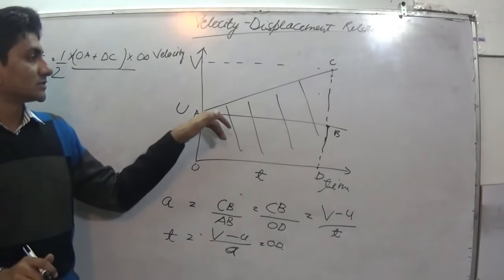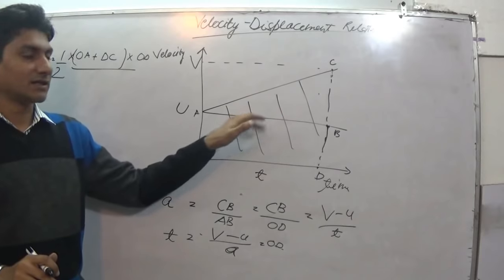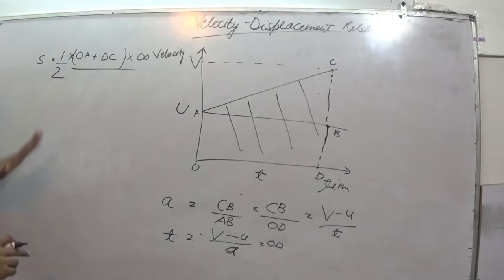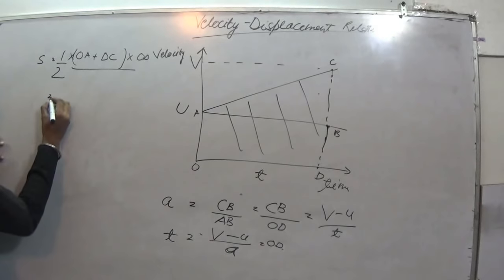We can also write it like half of the triangle, half the area of the triangle plus area of rectangle. Nothing will change. We are writing it in this way.